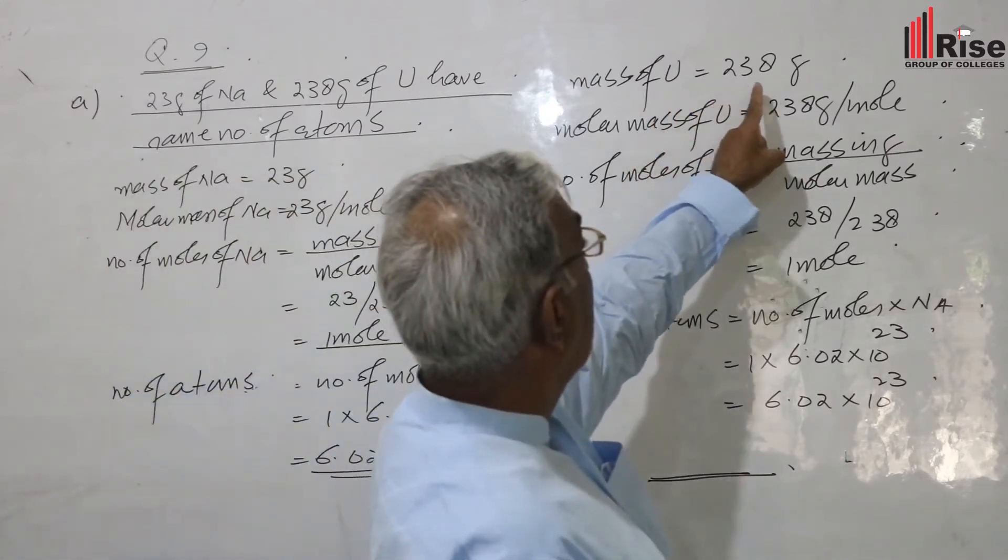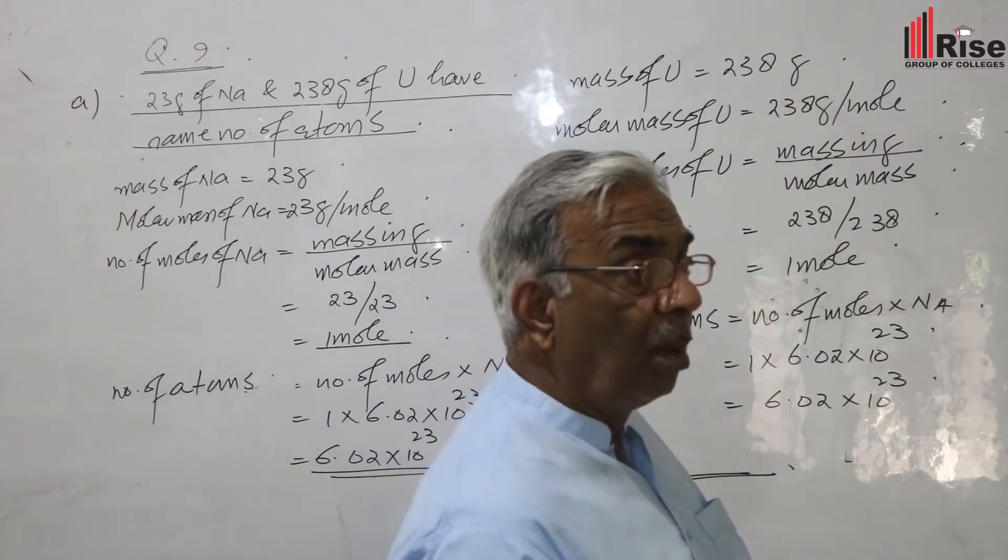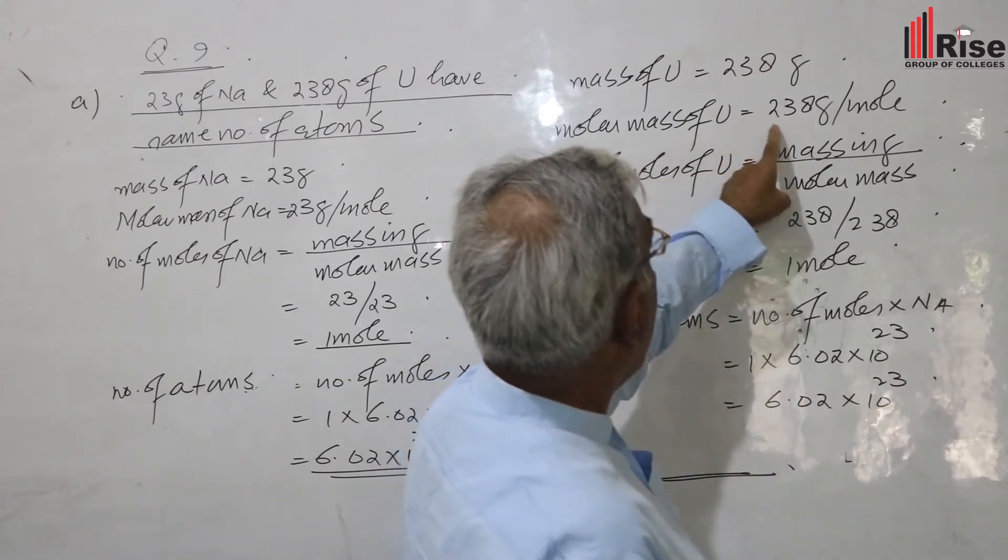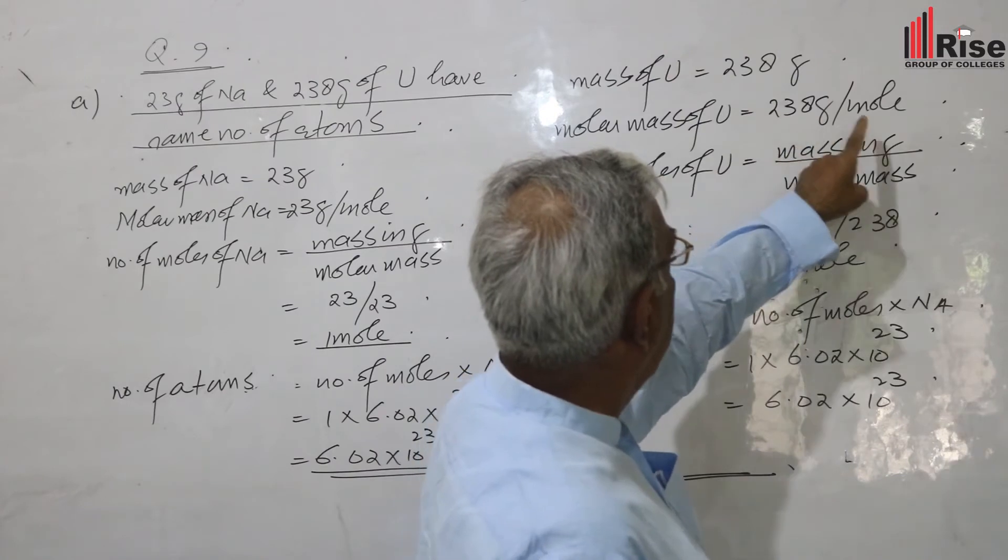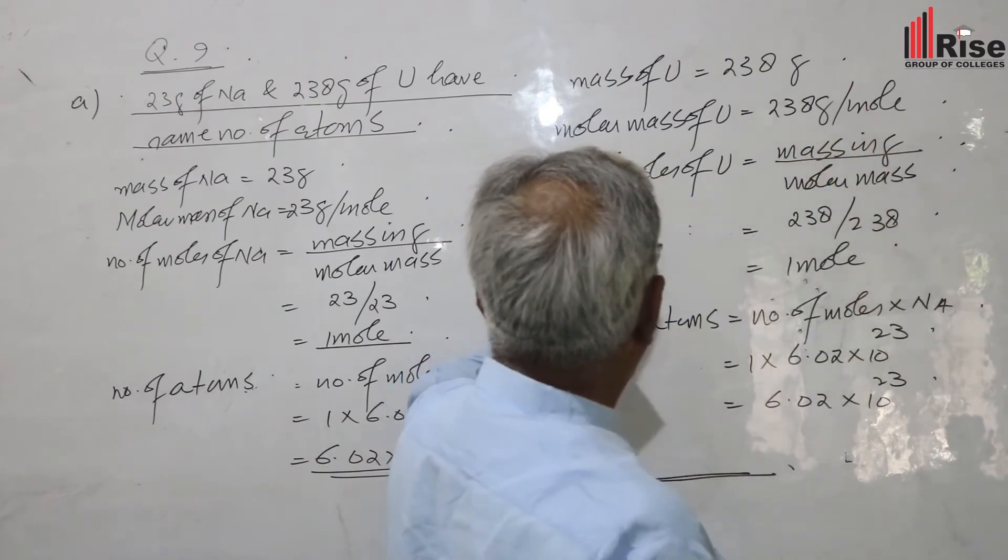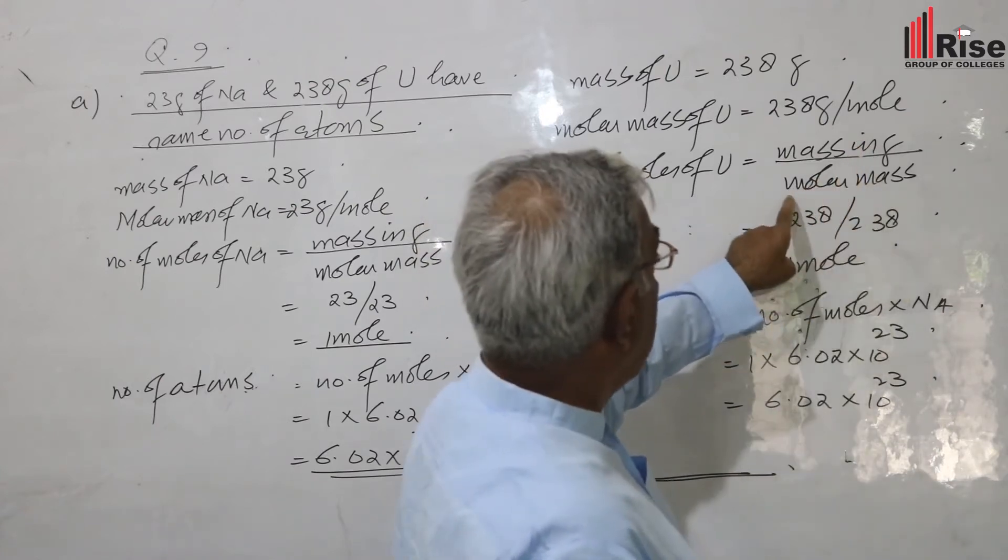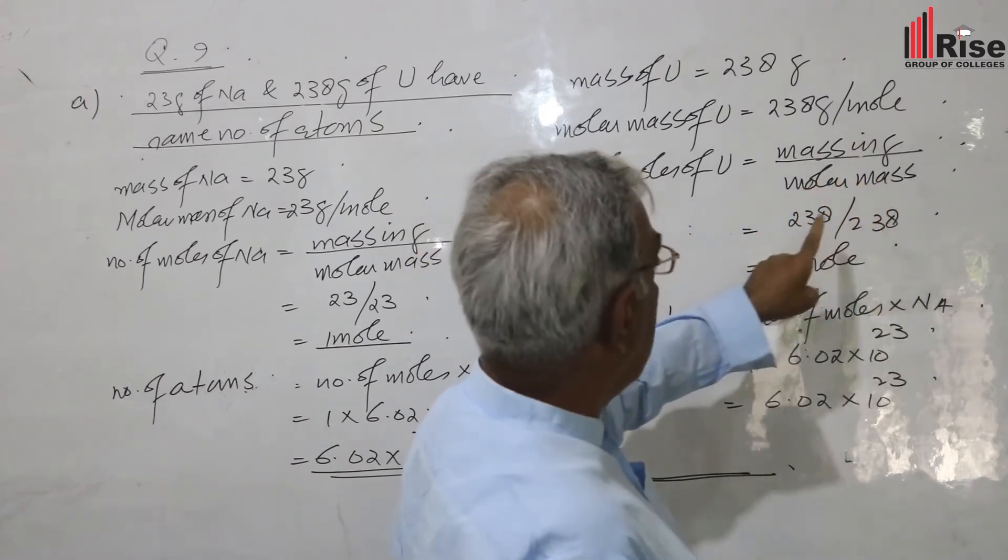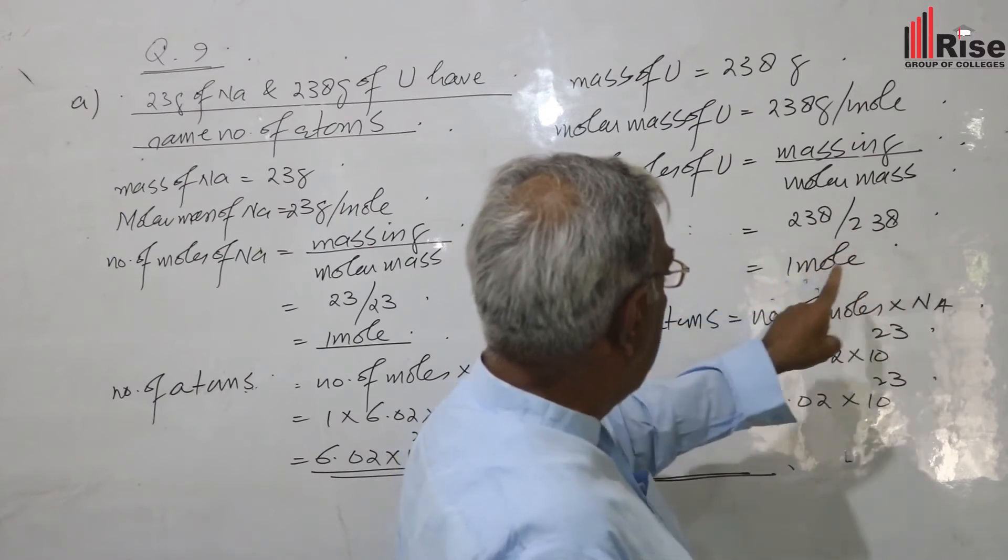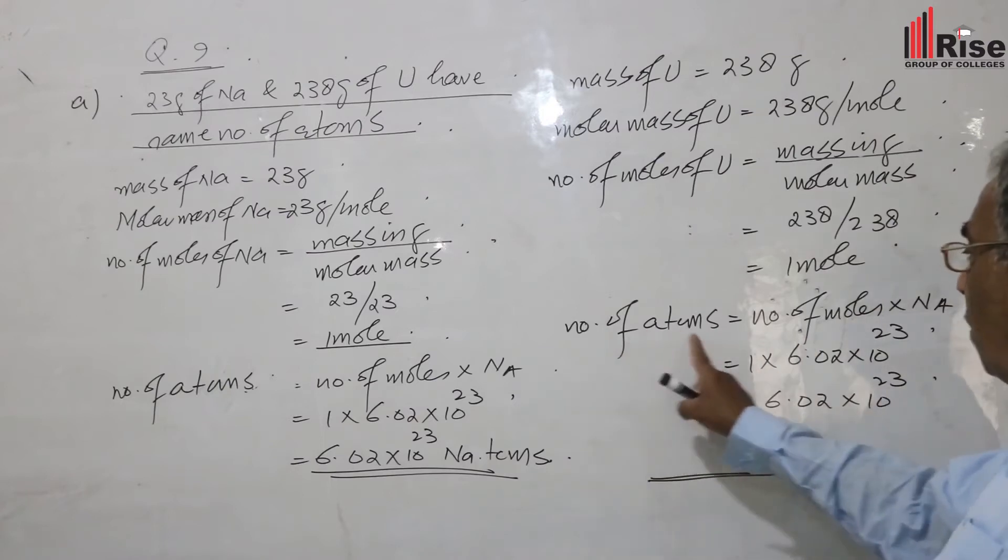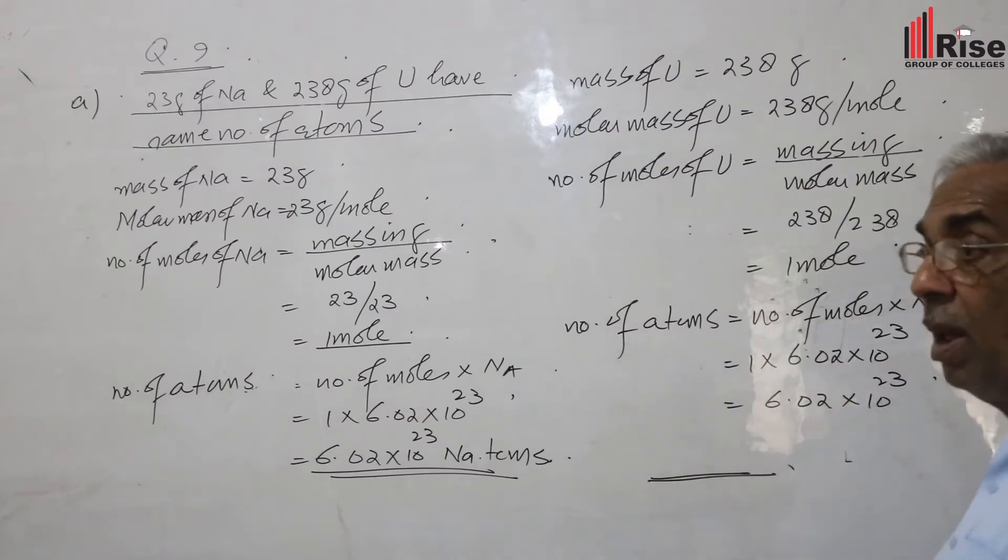Mass of uranium equals 238 grams. Moles of uranium equals mass in grams divided by molar mass: 238 divided by 238 equals one mole. Number of atoms equals one mole multiplied by Avogadro's number. Both particles equal one mole, so they have the same number of atoms.